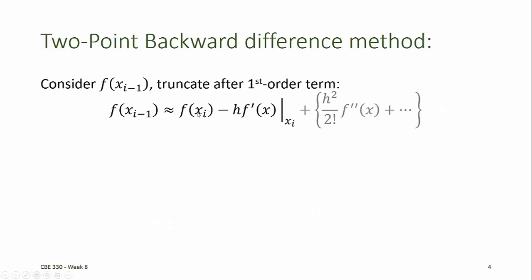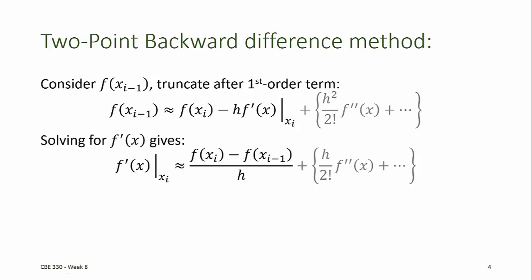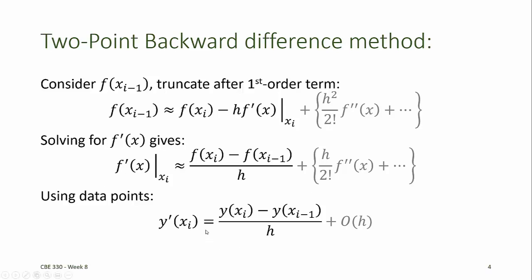If we write the Taylor series expansion around the point xi to approximate the value of f at xi minus 1, and then truncate the terms after the first-order term — so the second derivative and higher derivative terms are neglected — then we can solve for the derivative of f evaluated at xi as a function of f at xi and f at the previous point xi minus 1. Substituting the y values in for f gives a finite difference formula that approximates the derivative at xi using the value at xi and the value at xi minus 1, the previous data point. Because this is related to the slope of the data between xi minus 1 and xi, this is called a two-point backward difference method.